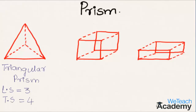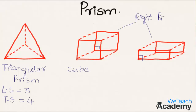Coming to the next prism — here the base is in the form of a square, so we name this prism a cube. We can also see a prism whose bases are perpendicular to the lateral edges and all lateral surfaces are squares or rectangles; such prisms are called right prisms. Both these prisms are right prisms.